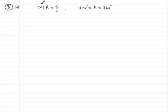Welcome to question number 8, part A. In this question we're given that cos A equals three quarters and that A is a reflex angle lying between 270 degrees and 360 degrees.